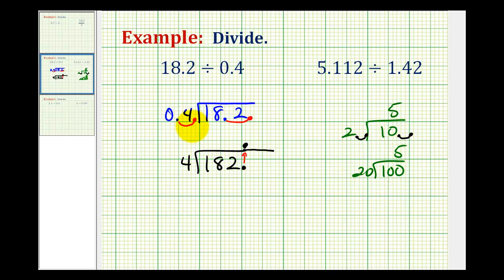So every time we move the decimal point to the right one place, we're really just multiplying the divisor and dividend by 10. Let's go ahead and perform this division now.